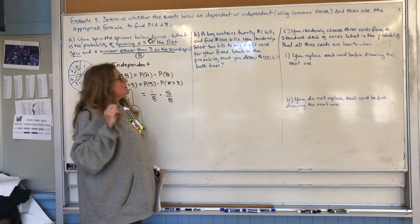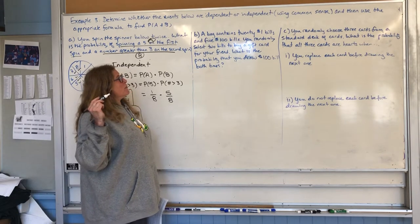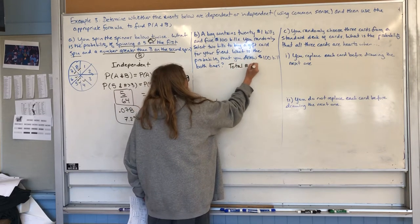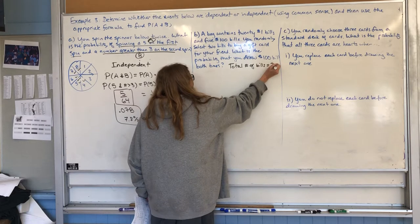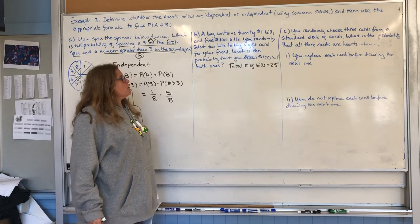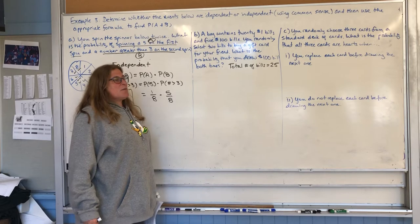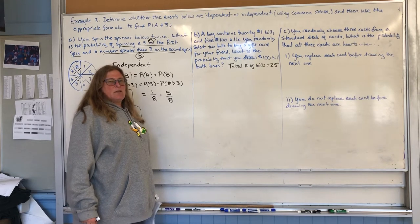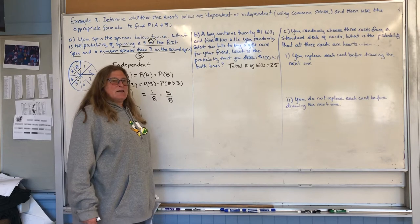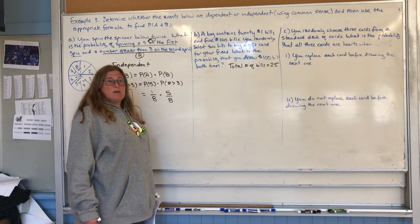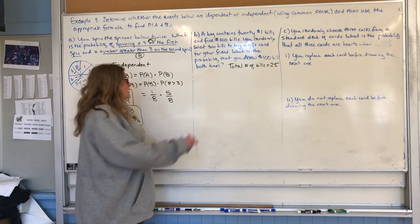What about this next one? A bag contains 20 one-dollar bills and 5 one-hundred-dollar bills — so there are 25 total bills. That's our sample space. You randomly select two bills to buy a gift card for your friend. What's the probability that you draw a $100 bill both times? Let's use our common sense — are these events dependent or independent? If I choose a $100 bill on the first draw, does that change the likelihood of drawing a $100 bill on the second draw? Yes, because now I've taken that $100 bill out and there aren't as many $100 bills in there, and there's also one fewer bill in the bag. So these are going to be dependent events.